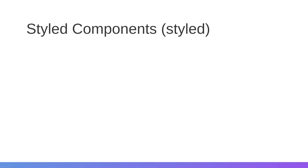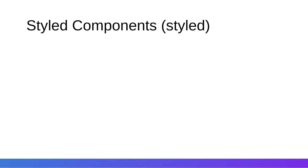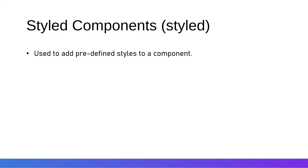Now we will talk about the styled components inside Material UI. Styled is used to apply predefined styles to a component. We call the styled function and pass the component as an argument, then apply styles within backticks. We can add any style like color, hover effect, margin, or padding inside those backticks.